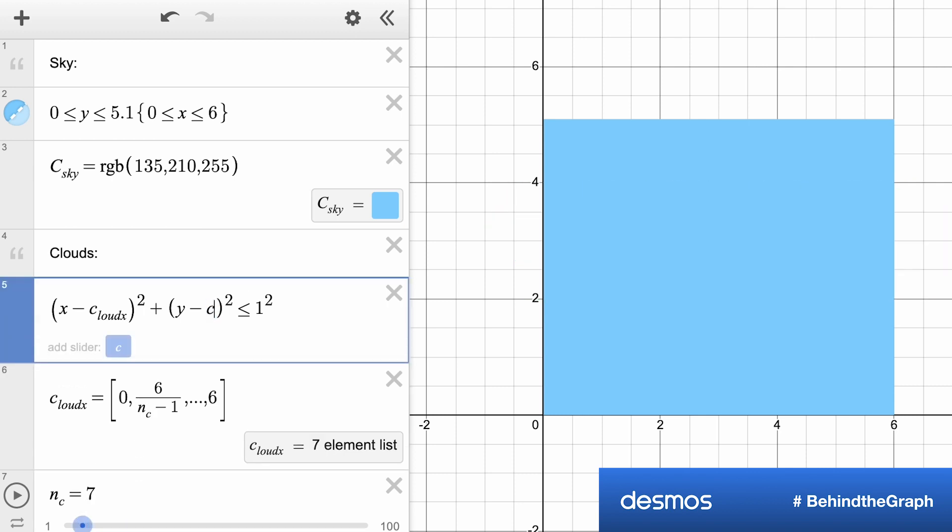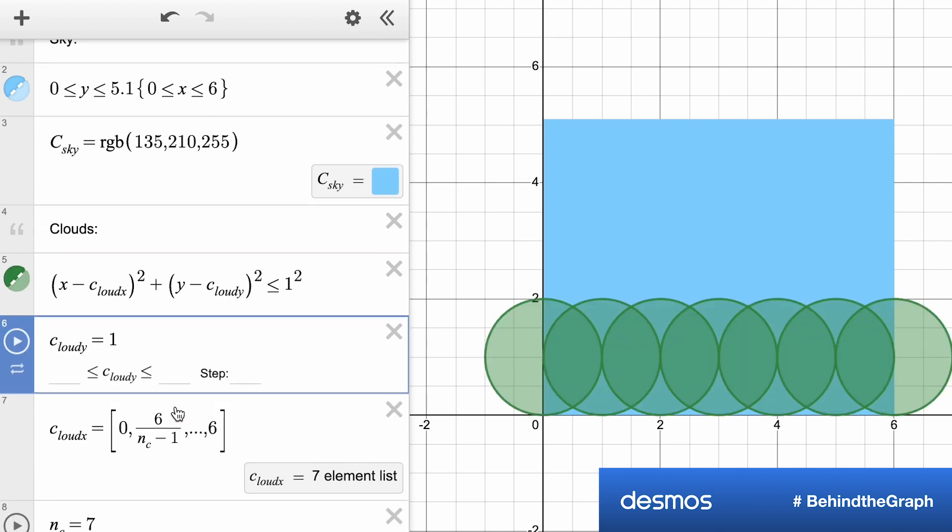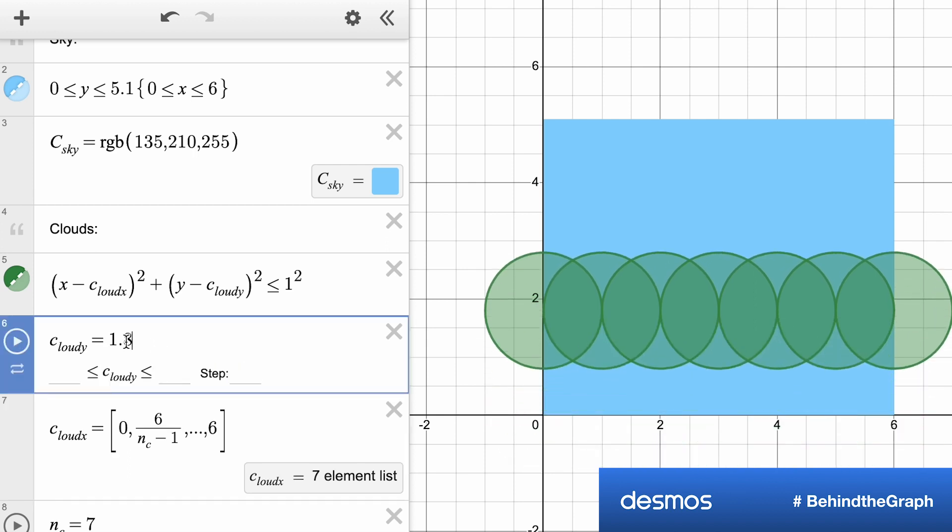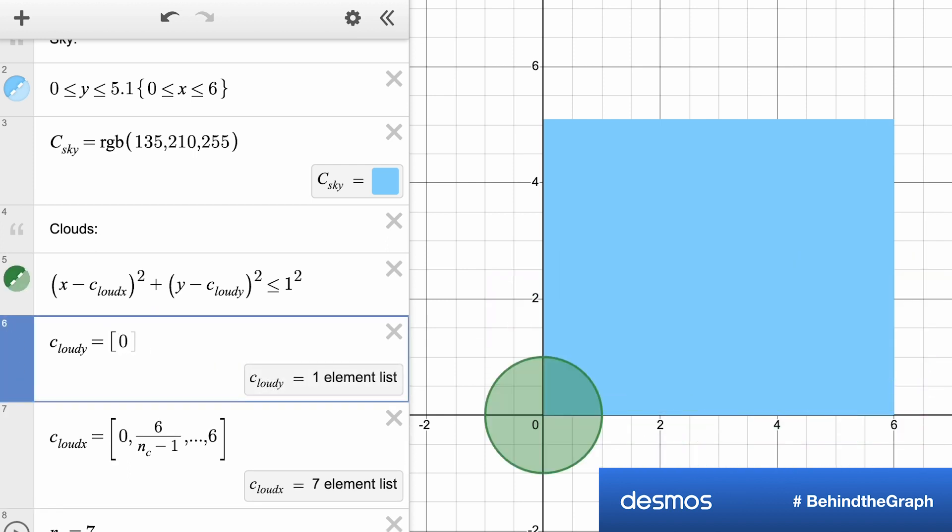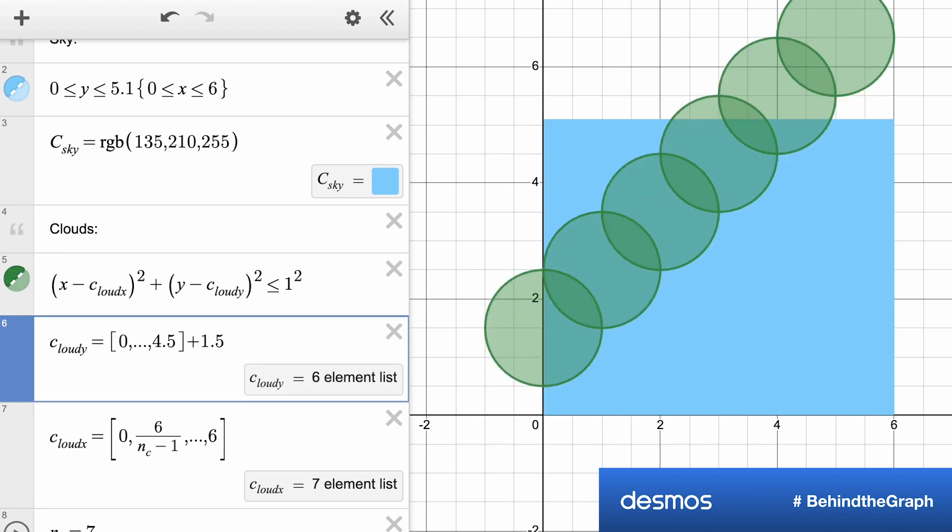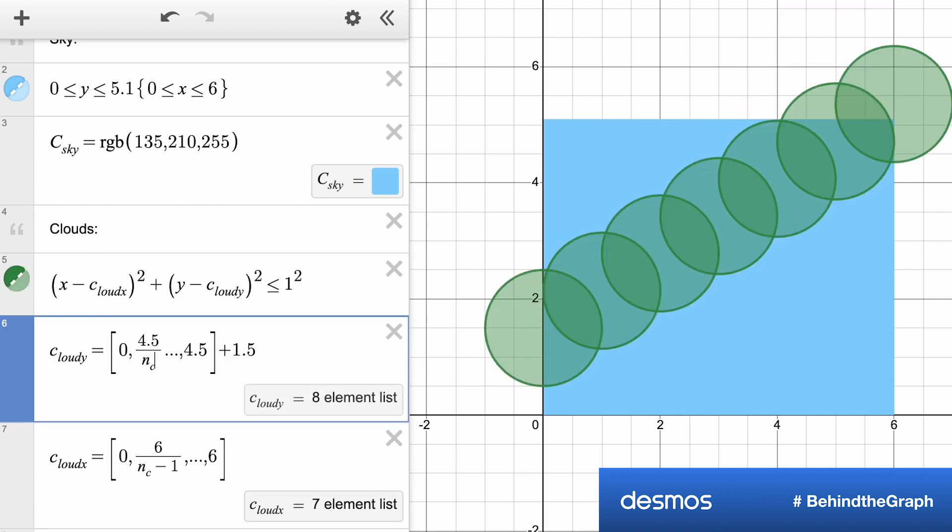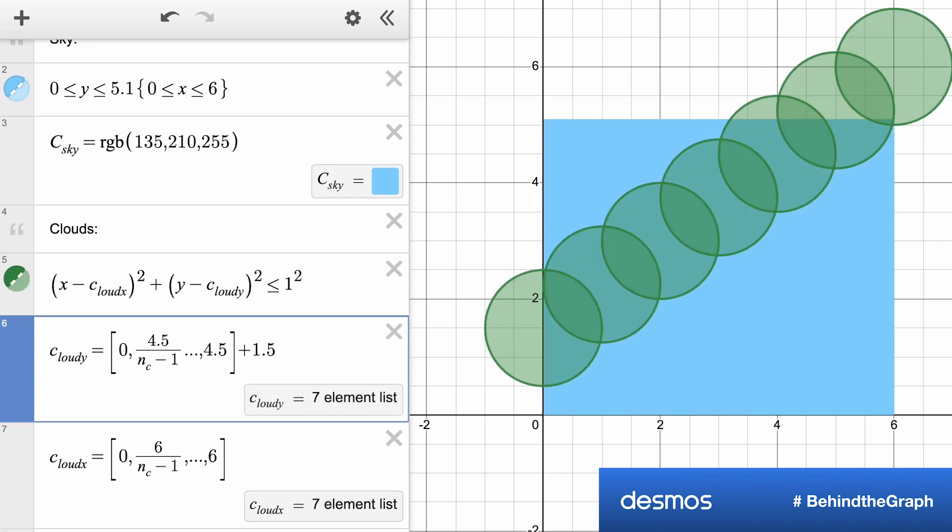Let's do the same thing with the Y values. So again, bring in a cloud_y variable to change the up and down location of these clouds. Again, we'll bring in a list for the cloud_y values. We'll say all these values between zero and 4.5, but we'll shift it up a little bit. We don't need clouds behind the water. And again, broken up how many times that ends up n_c times. So breaking up that list to get all of those clouds,